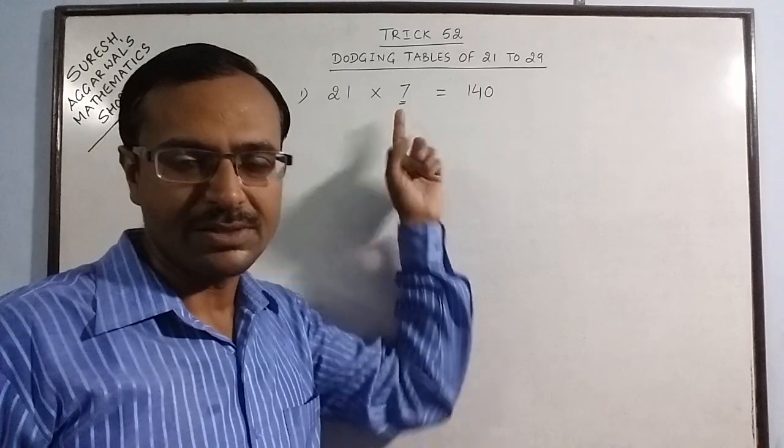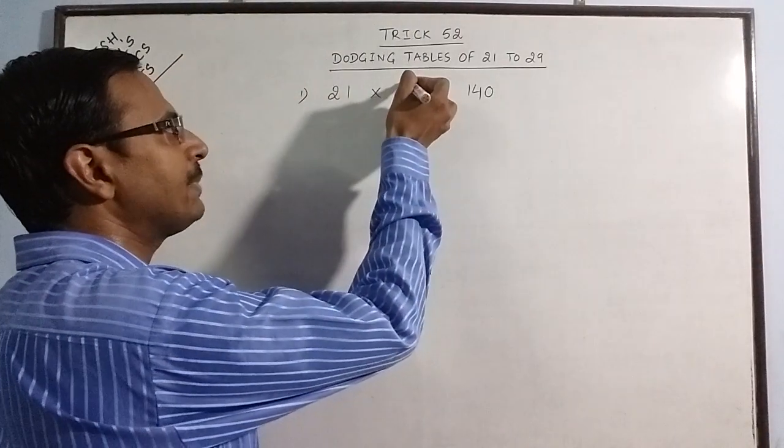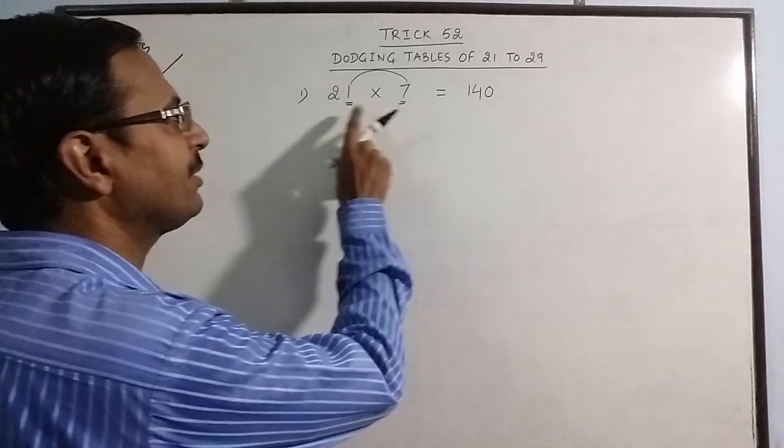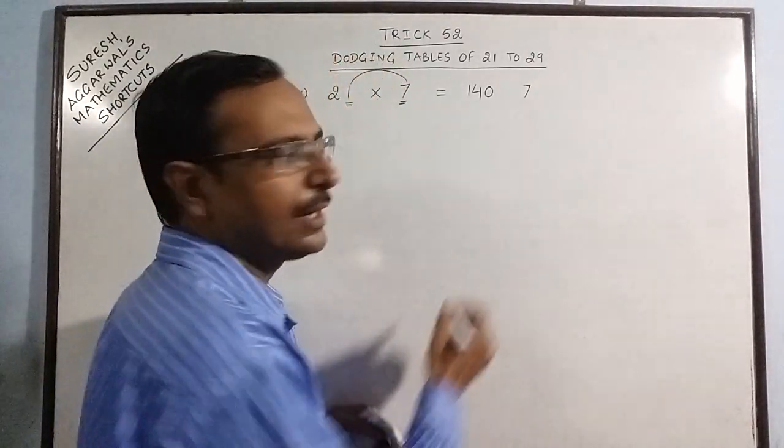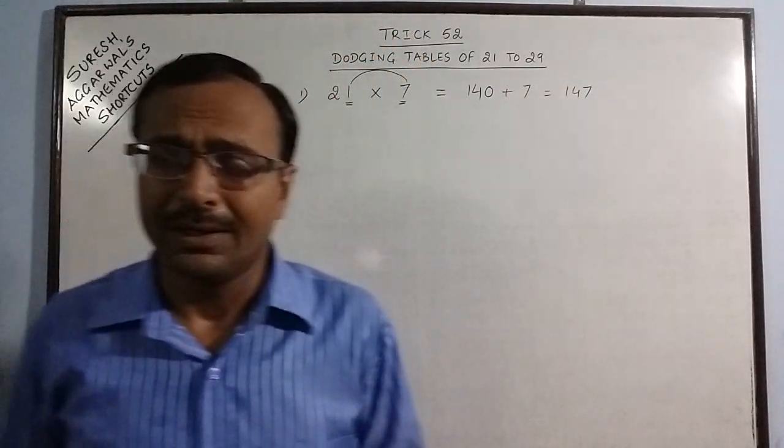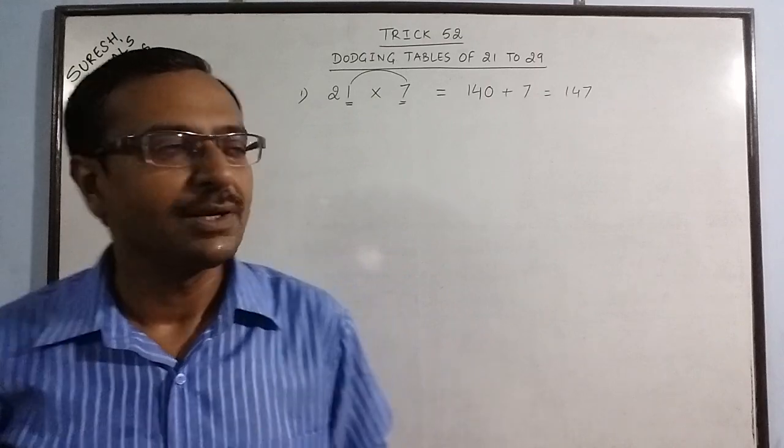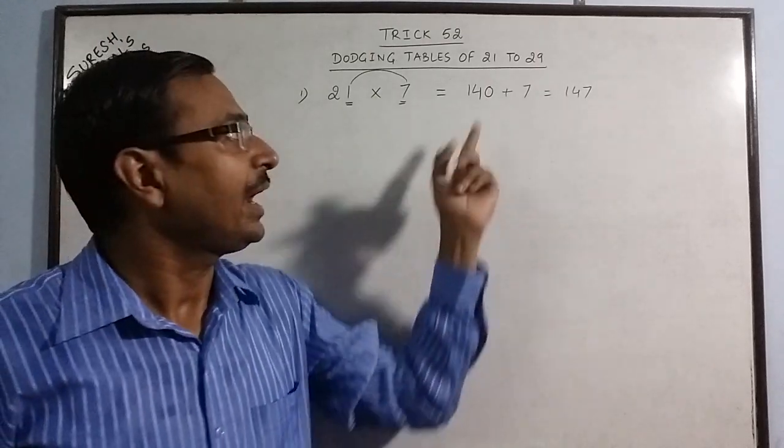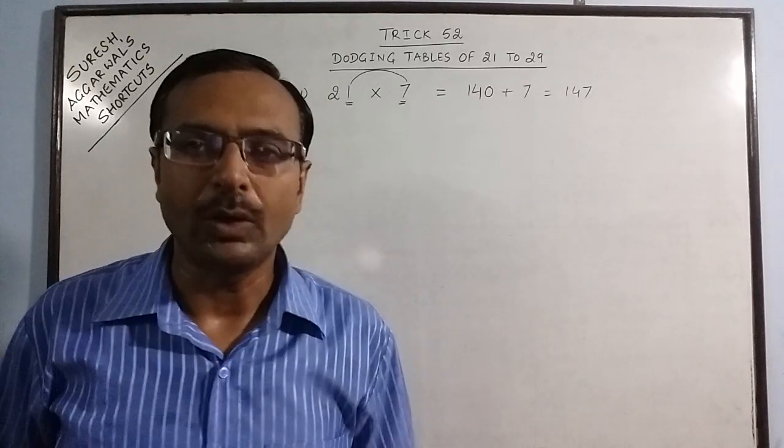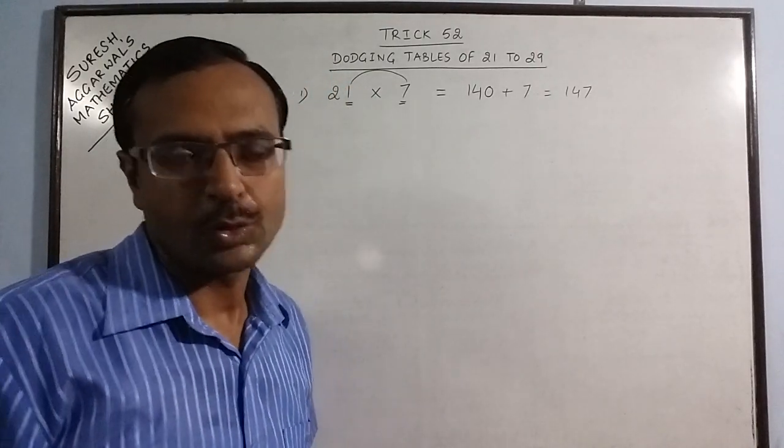Now multiply this number with the units place of this number. We multiply 7 by 1, that is 7. Now just add these two numbers: 147 is the required product. How much time does it take? I think by mere practice of 5 minutes you can master this skill and write all dodging tables from 21 to 29 in just 2 seconds with little practice and patience.